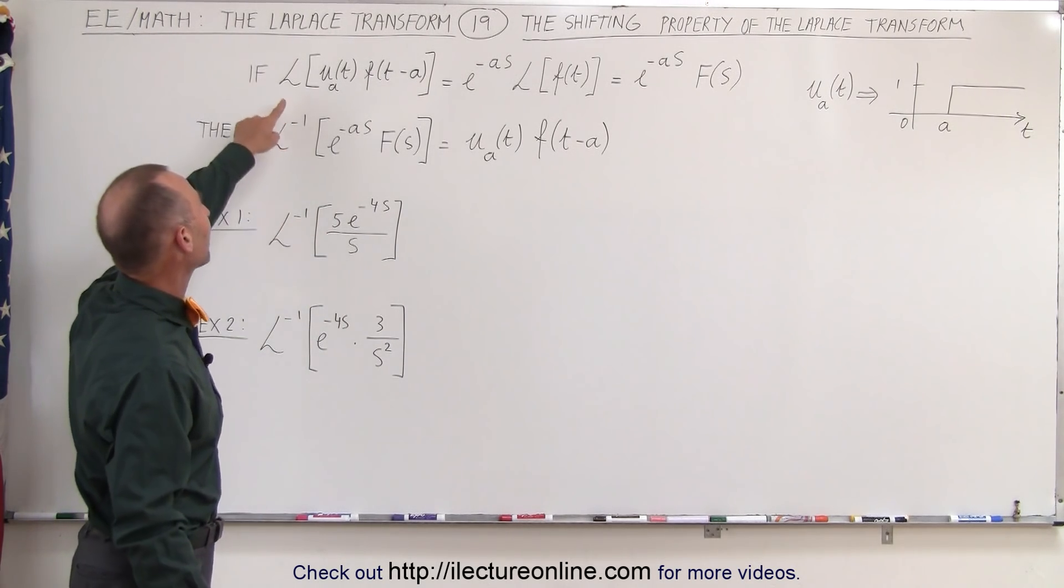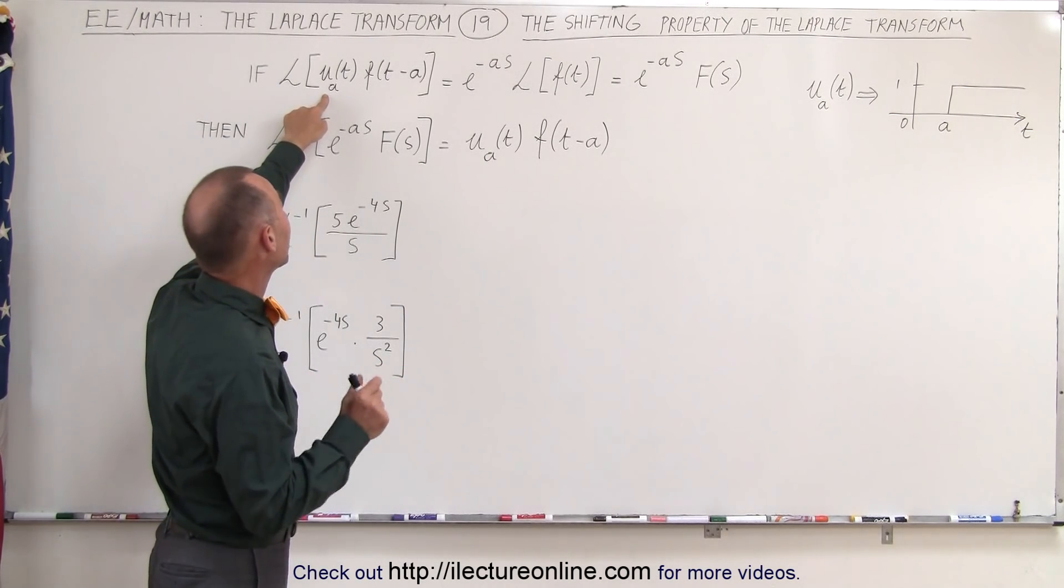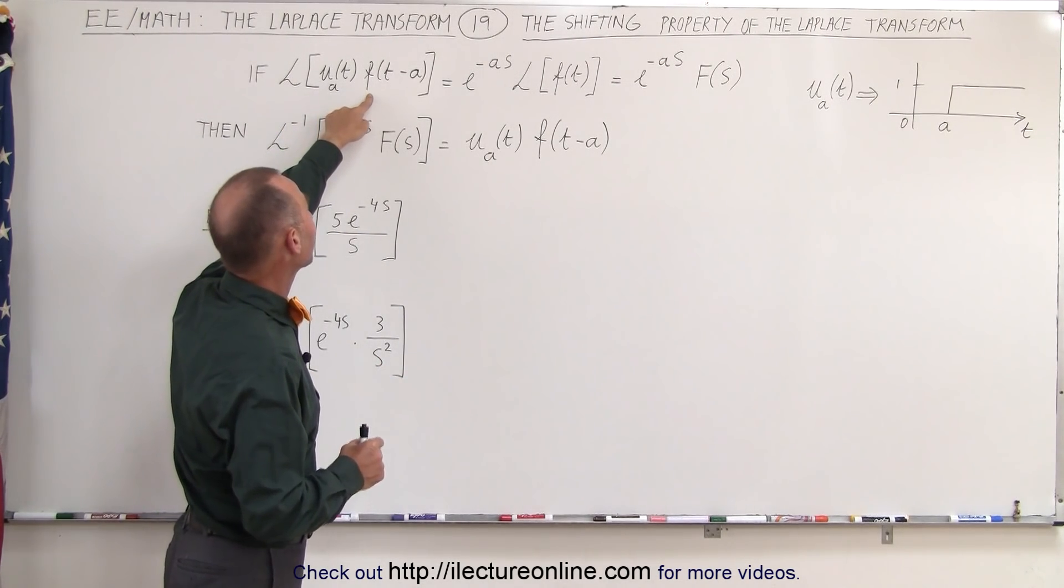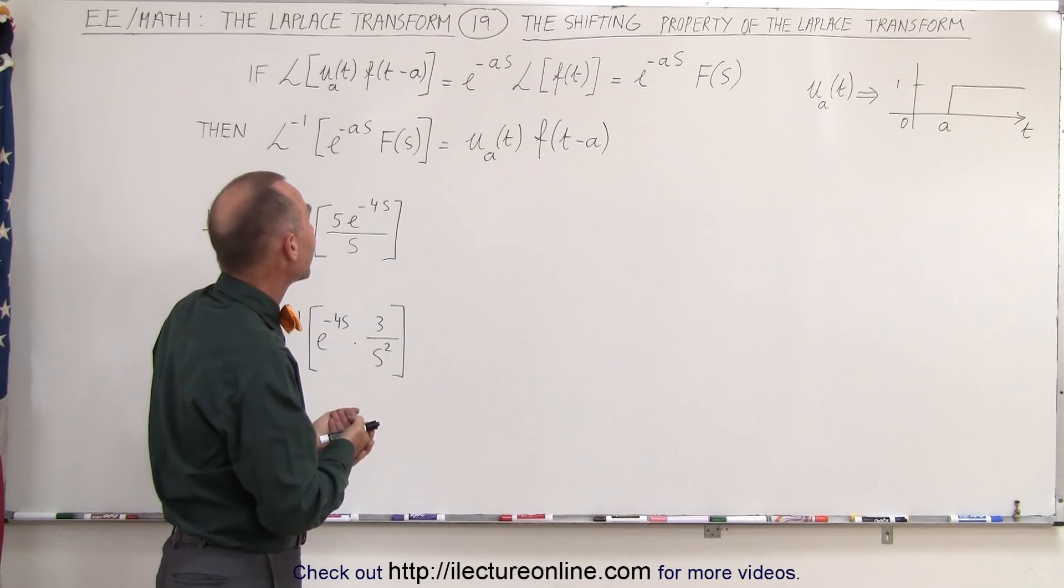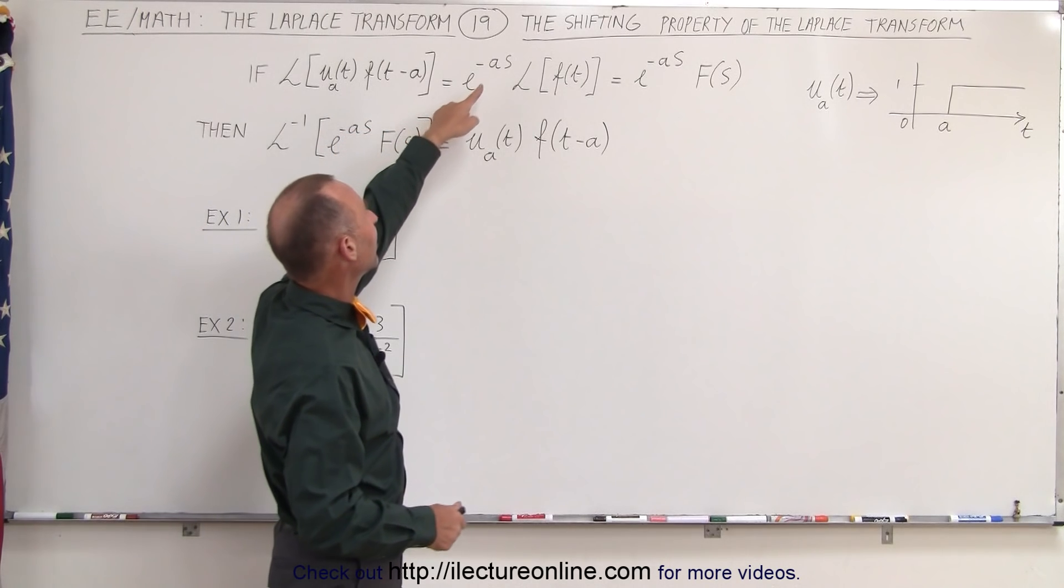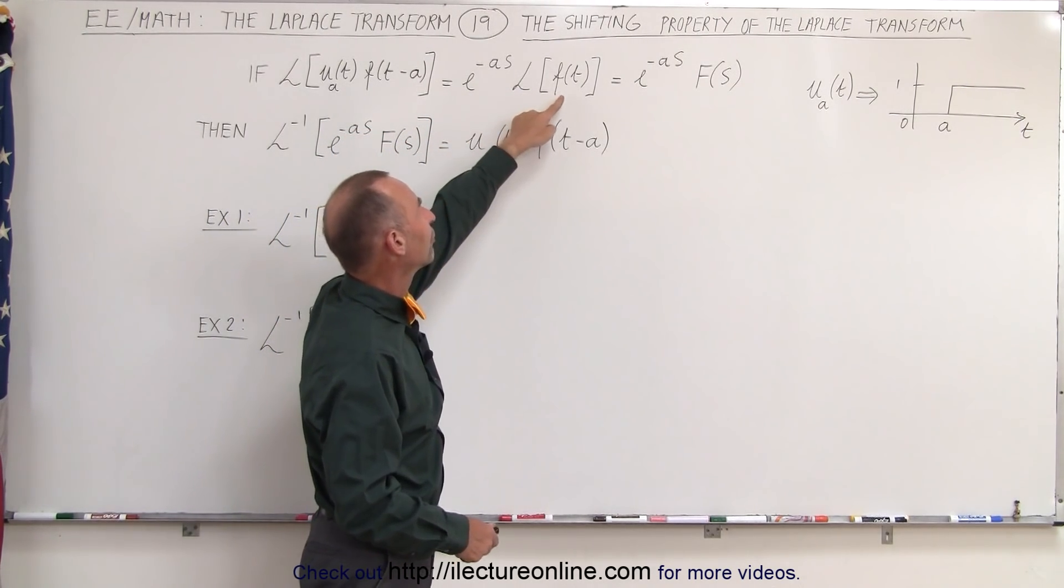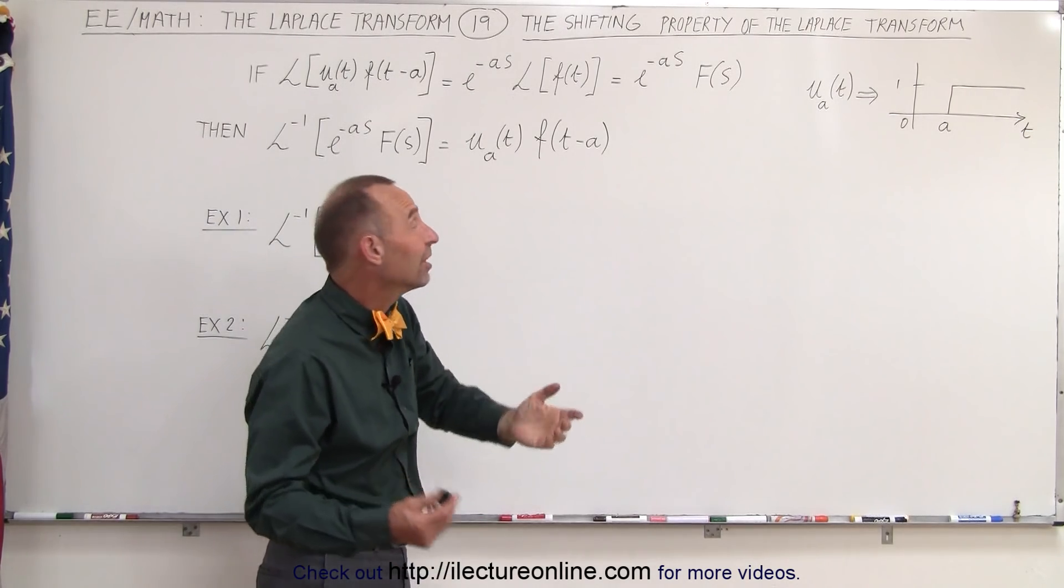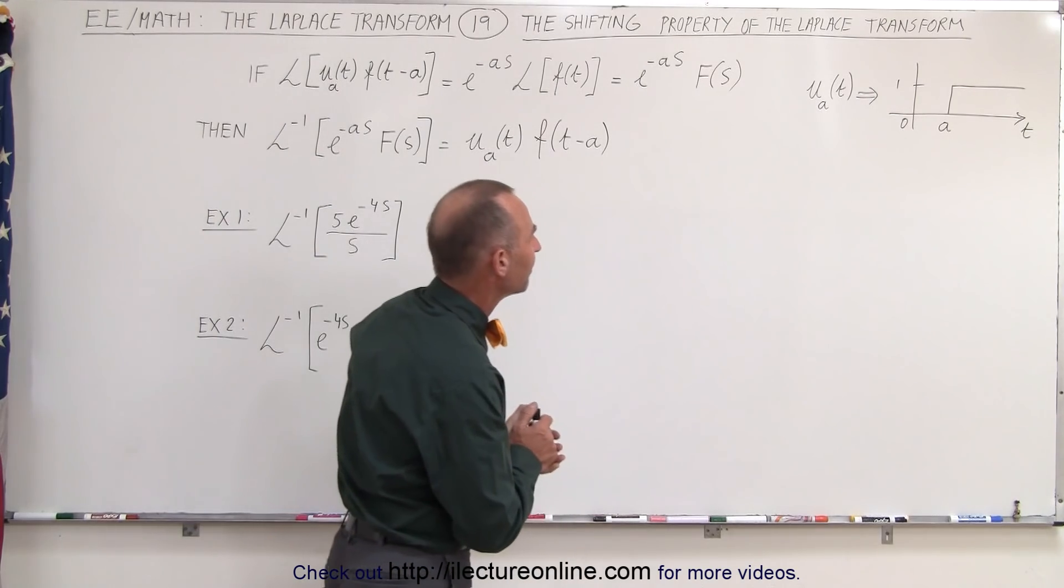Here we have the Laplace transform of the step function delayed by the time equal to a, multiplied times the function time minus a shifted by a factor of a in the time. When we do that we get e to the minus as times the Laplace transform of the function that's not shifted, which can be written as e to the minus as times the function in the frequency domain.